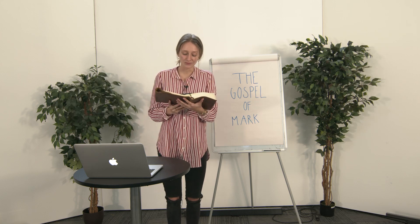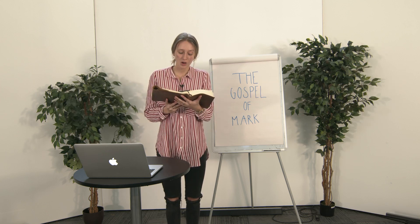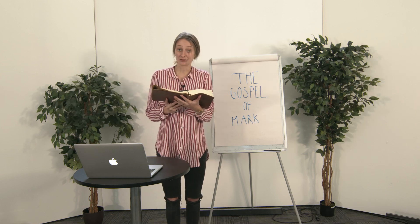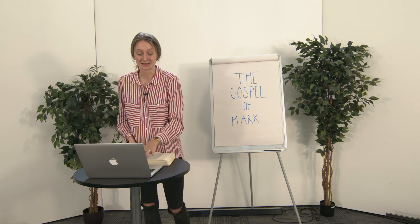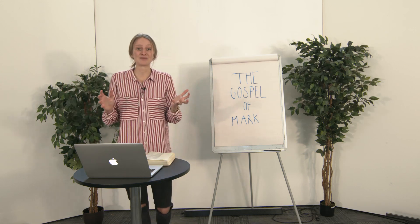One young man following behind was clothed only in a long linen shirt. When the mob tried to grab him, he slipped out of his shirt and ran away naked. That is one of the stranger passages in Mark. No idea what it means, but let's see what we can figure out in the book of Mark.